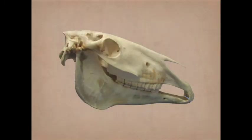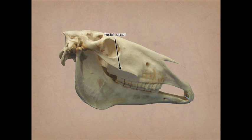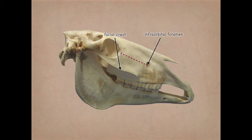Here is a skeleton showing the facial crest. If we draw a line from the medial canthus of the eye parallel to the facial crest, just a little bit rostral to the end of the facial crest, we'll find the infraorbital foramen. You can palpate the lateral edge of that foramen on a live animal.